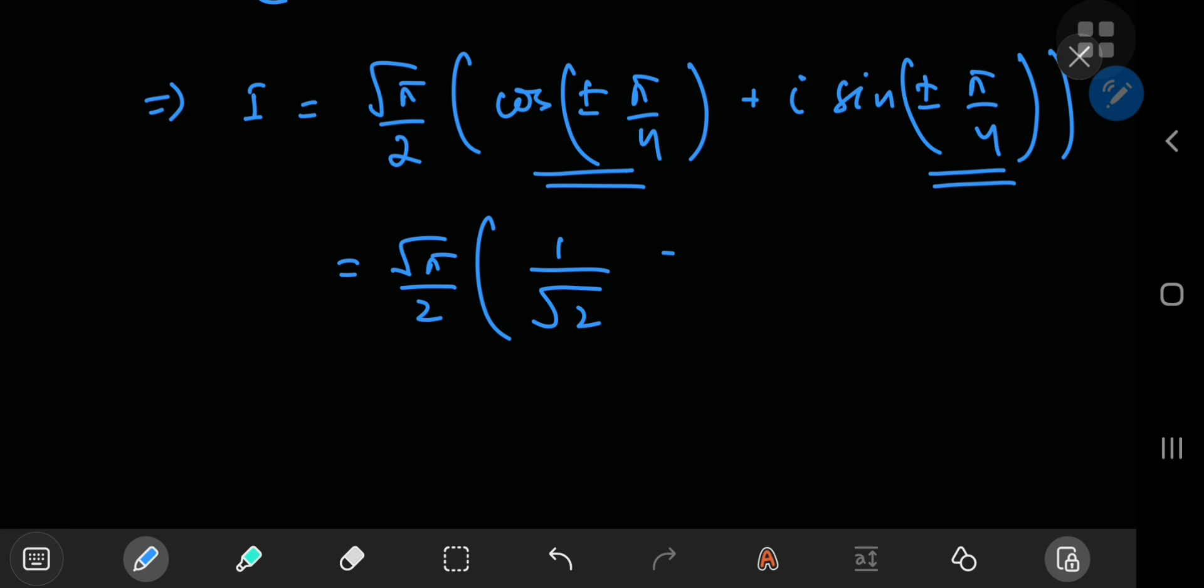So if there's a negative sign, you can pull it out. And this is i times sine pi by 4, which is once again 1 by square root 2. And on further simplification, you have,